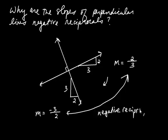That is, you get this slope by taking the reciprocal of 2/3 and then taking the negative of that.